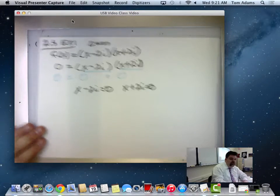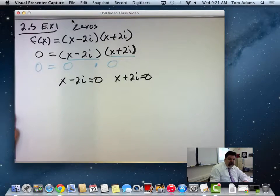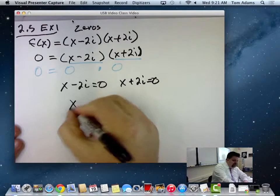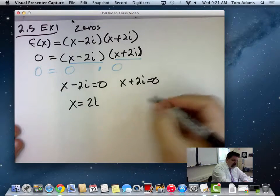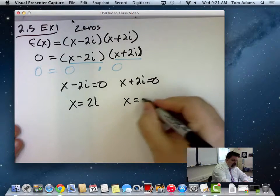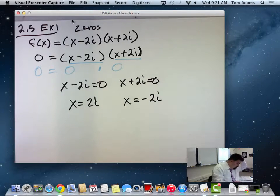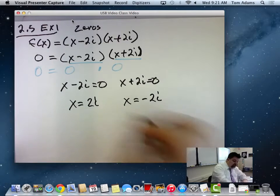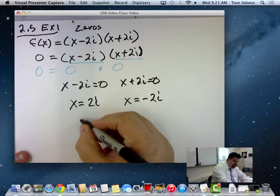Okay. And so when I do those two things, let me zoom in a little bit here. When I do those two things, I get x is equal to 2i and x is equal to -2i. And so really that's it for that one. Those are the two zeros. Now, these zeros are not real, so these are not x-intercepts.